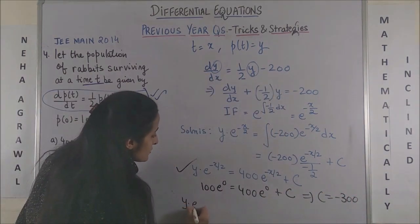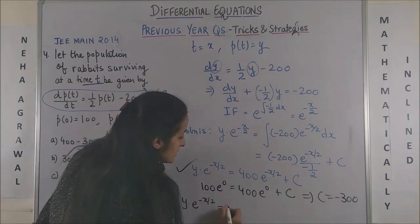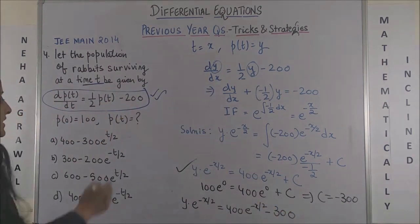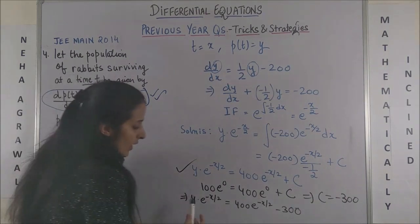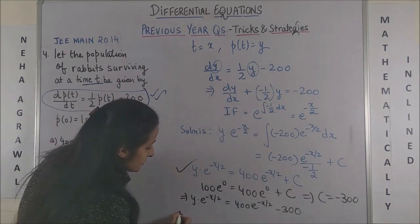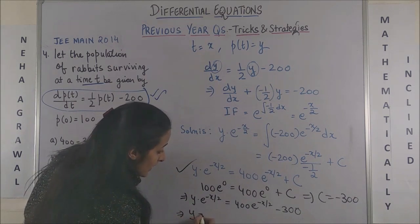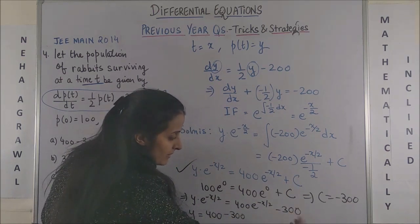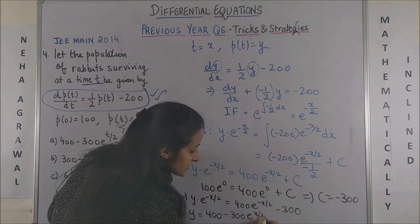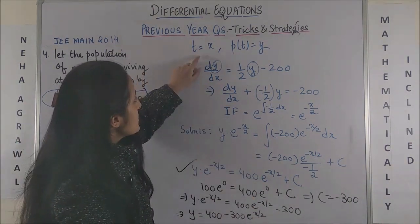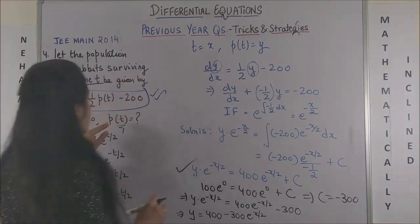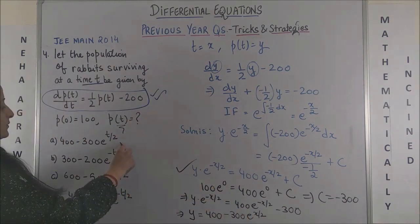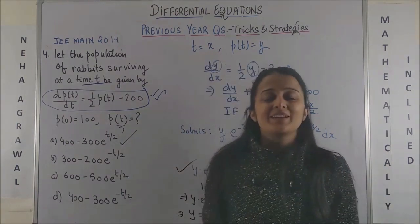The equation becomes y·e^(−x/2) = 400·e^(−x/2) − 300. Dividing throughout by e^(−x/2): y = 400 − 300·e^(x/2). Replacing back x = t and y = P(t): P(t) = 400 − 300·e^(t/2). That's the very first option.